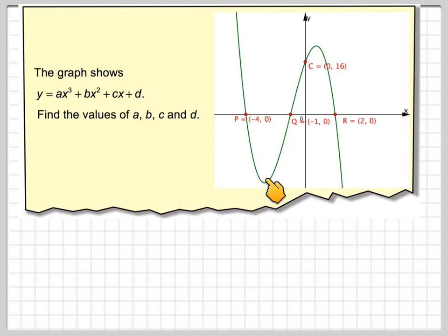So quite often you're given a graph, this looks like some sort of cubic, and you know it cuts the x-axis and you know where it cuts the y-axis, and you have to come up with the equation of this graph. So y equals ax cubed plus bx squared plus cx plus d.